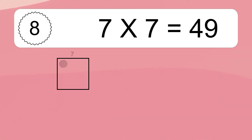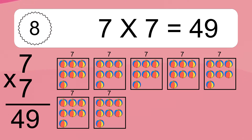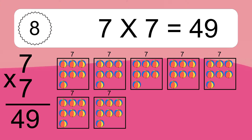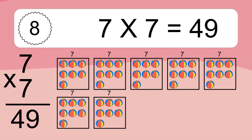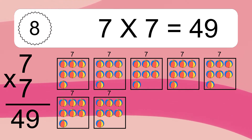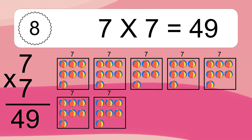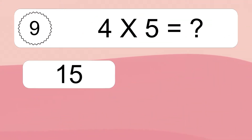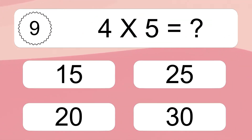7 times 7 equals what? 7 times 7 equals 49. We have 7 boxes and each box has 7 colorful balls inside. If you count all the balls in all the boxes together, you will have 7 times 7 balls. This equals 49 balls.